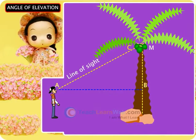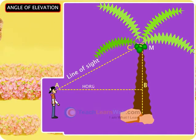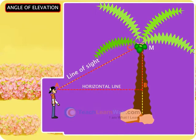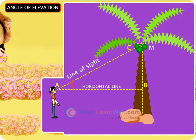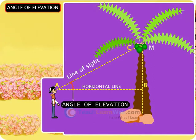If AB is considered as the horizontal line, then the angle BAC formed by the line of sight with the horizontal is the angle of elevation.